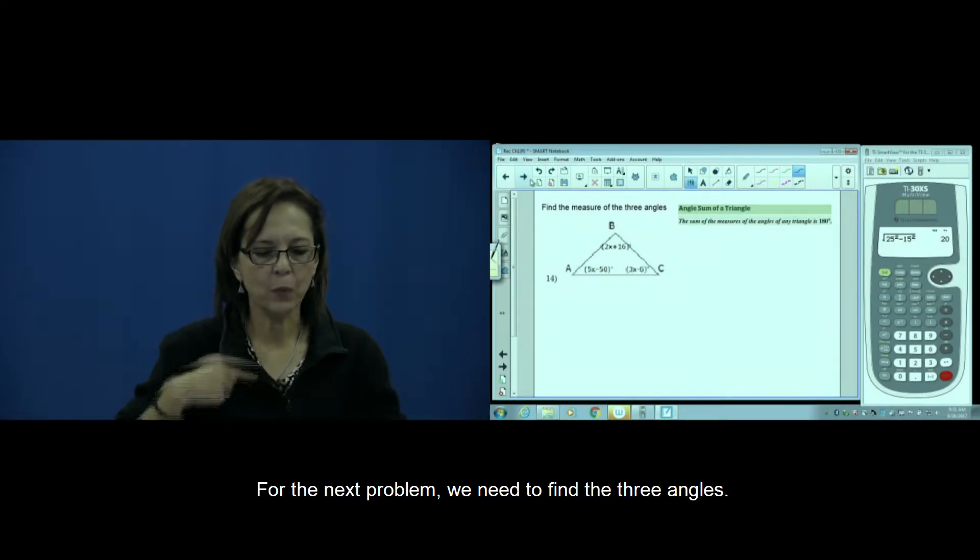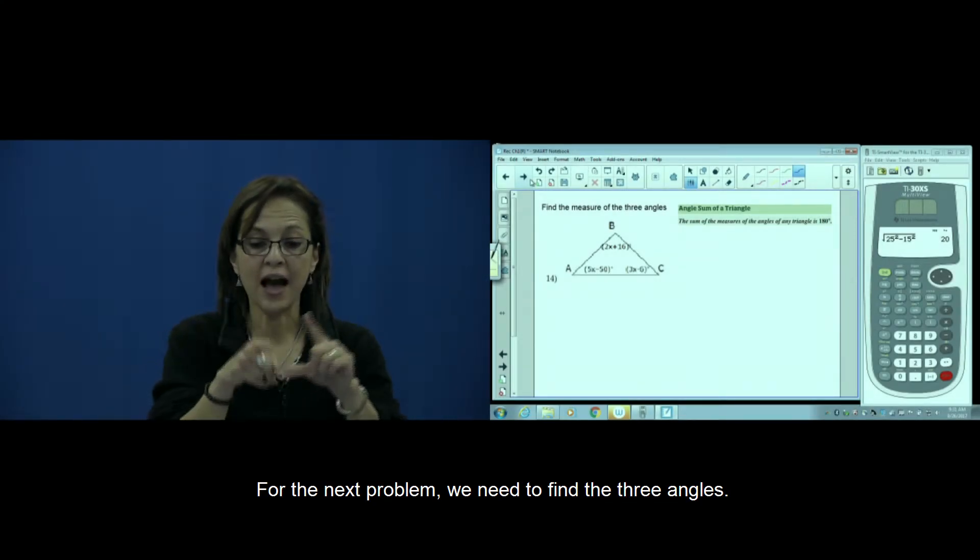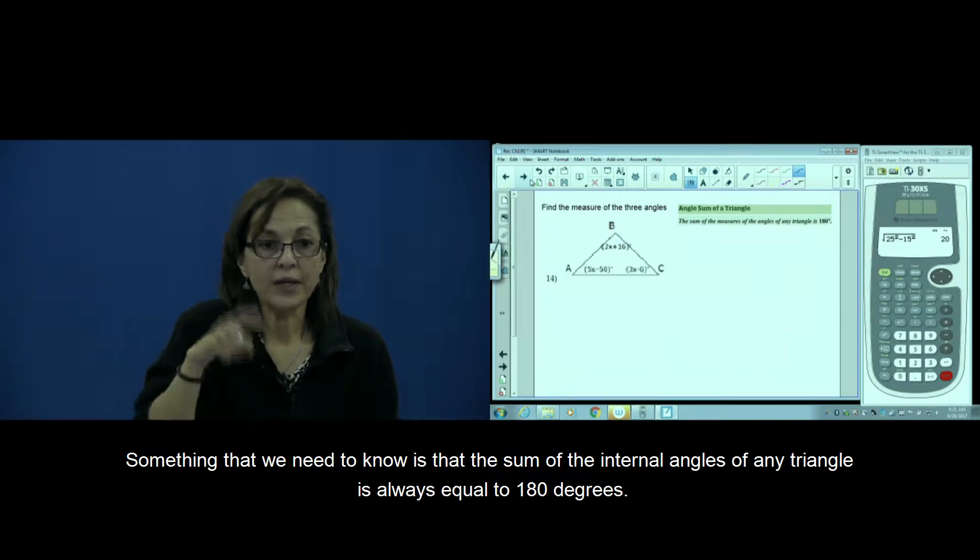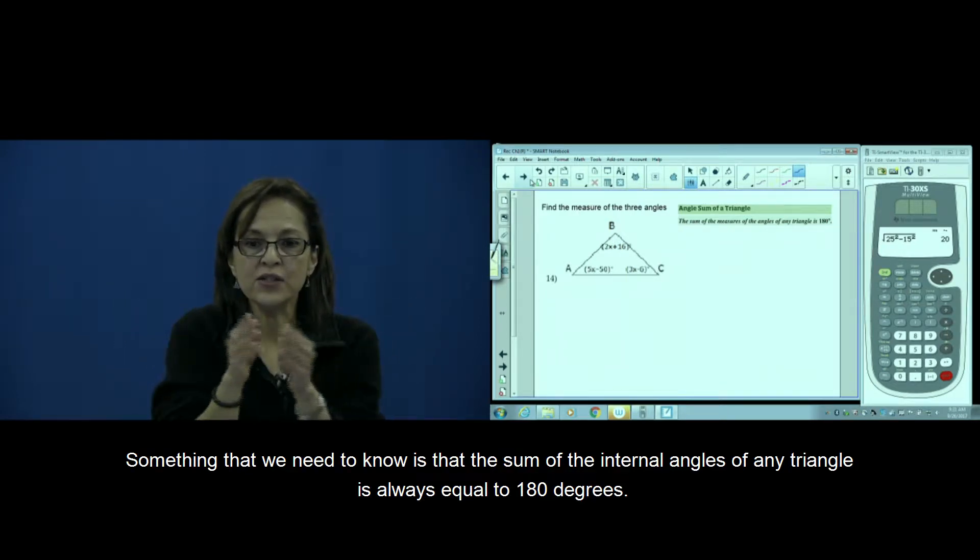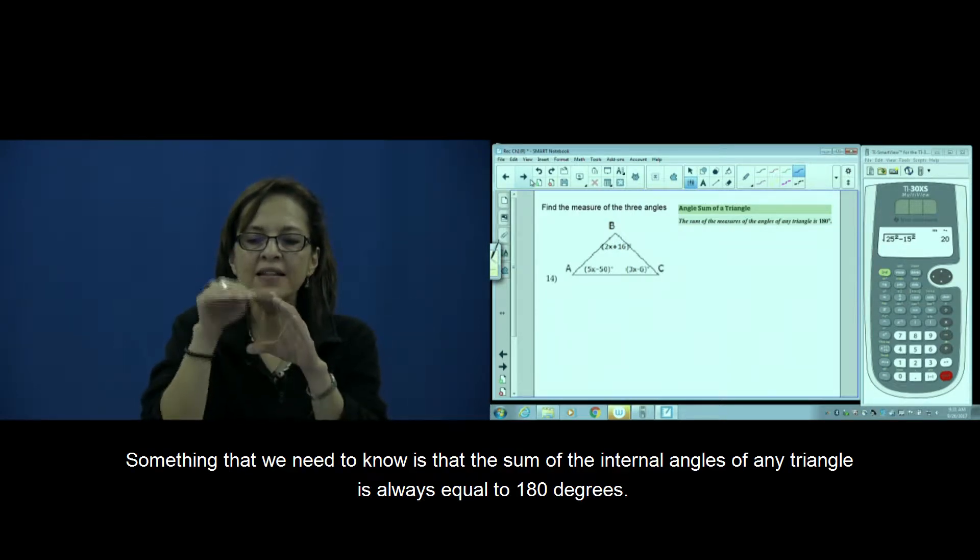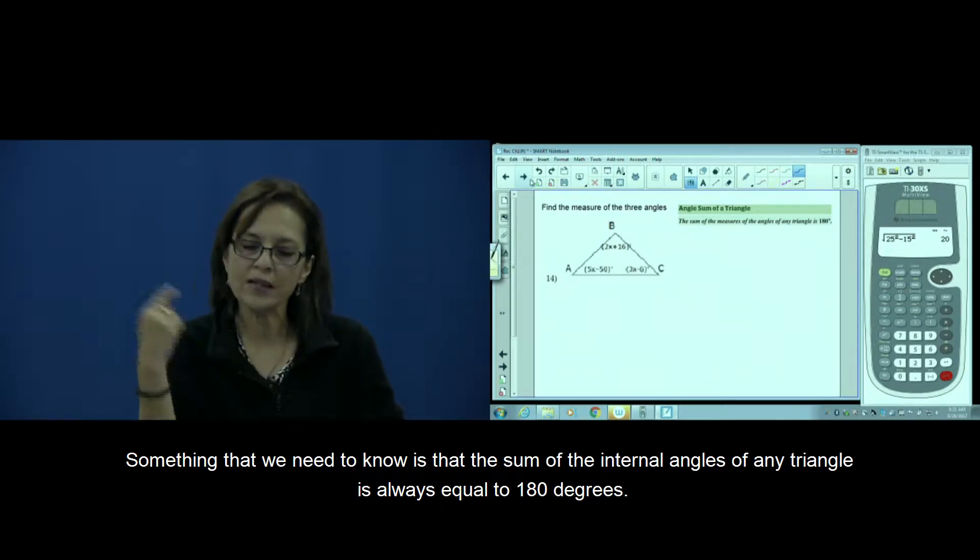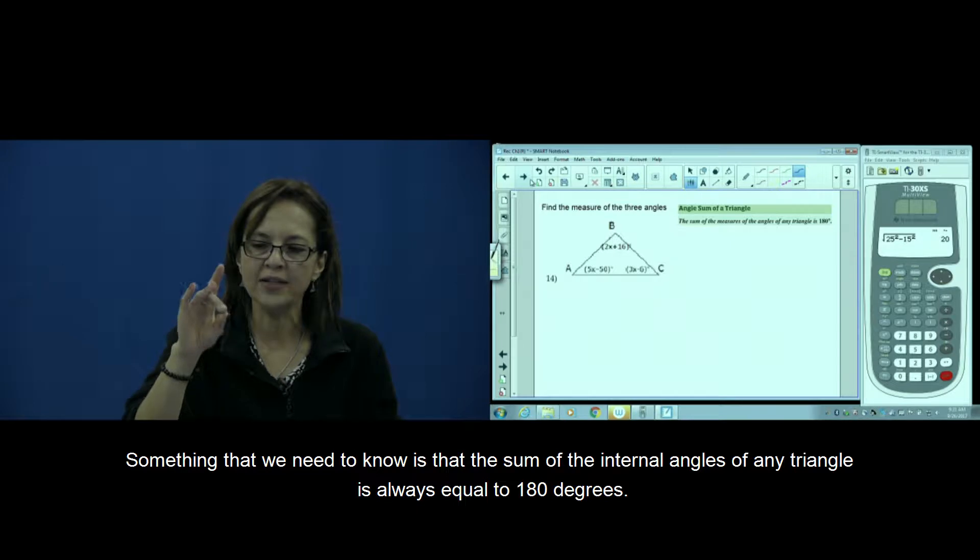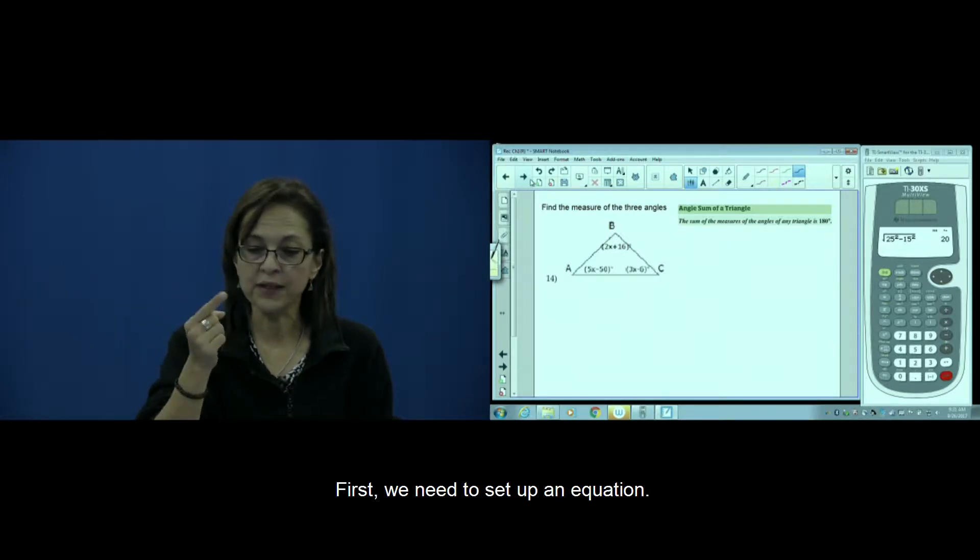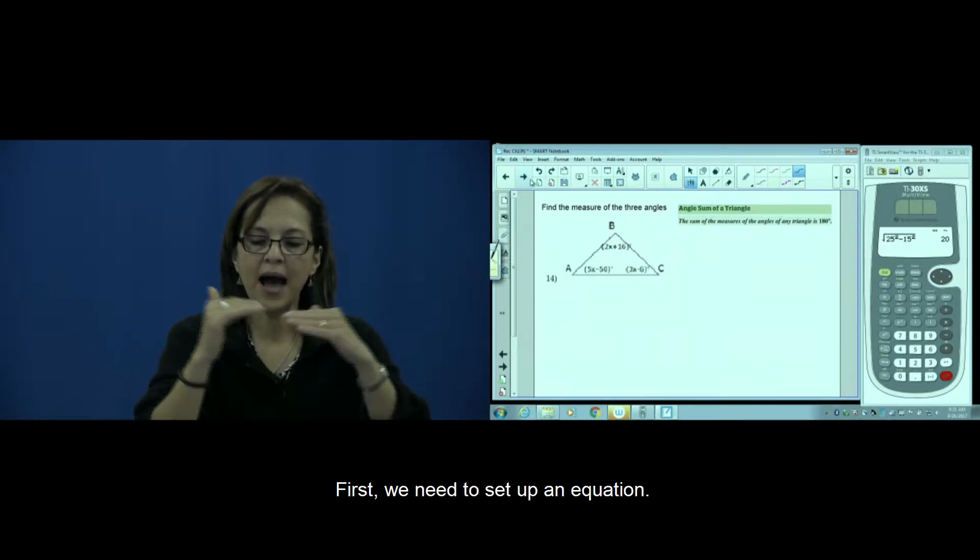In the next problem, we need to find the three angles. Something we need to know is that the sum of the internal angles of any triangle is always, always 180 degrees. Then first we need to set up an equation.